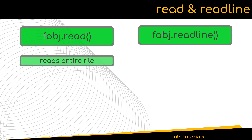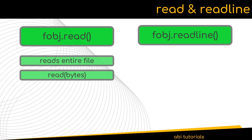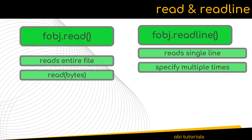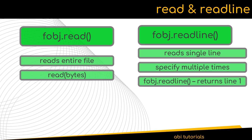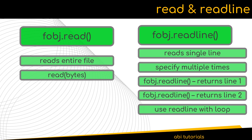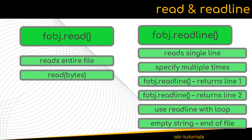The read function reads the entire file by default, though you can also specify the number of bytes to be read. The readline function reads a single line from the file. If you want to read multiple lines using readline, you will have to call it multiple times — the first call returns line 1, the next call returns line 2, and so on. For better results, use readline in combination with a while loop. When there is nothing to read or if it reaches the end of the file, readline will return an empty string.